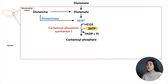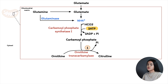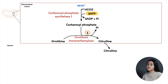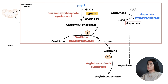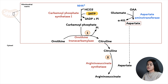The urea cycle has four enzymatic steps. In step one, carbamoyl phosphate donates its carbamoyl group to ornithine to form citrulline, catalyzed by ornithine transcarbamylase. Steps two and three bring in the second amino group from aspartate, which is generated in mitochondria by transamination of oxaloacetate. In step two, a cytosolic reaction catalyzed by argininosuccinate synthetase — requiring ATP and proceeding through a citrulline-AMP intermediate — produces argininosuccinate.